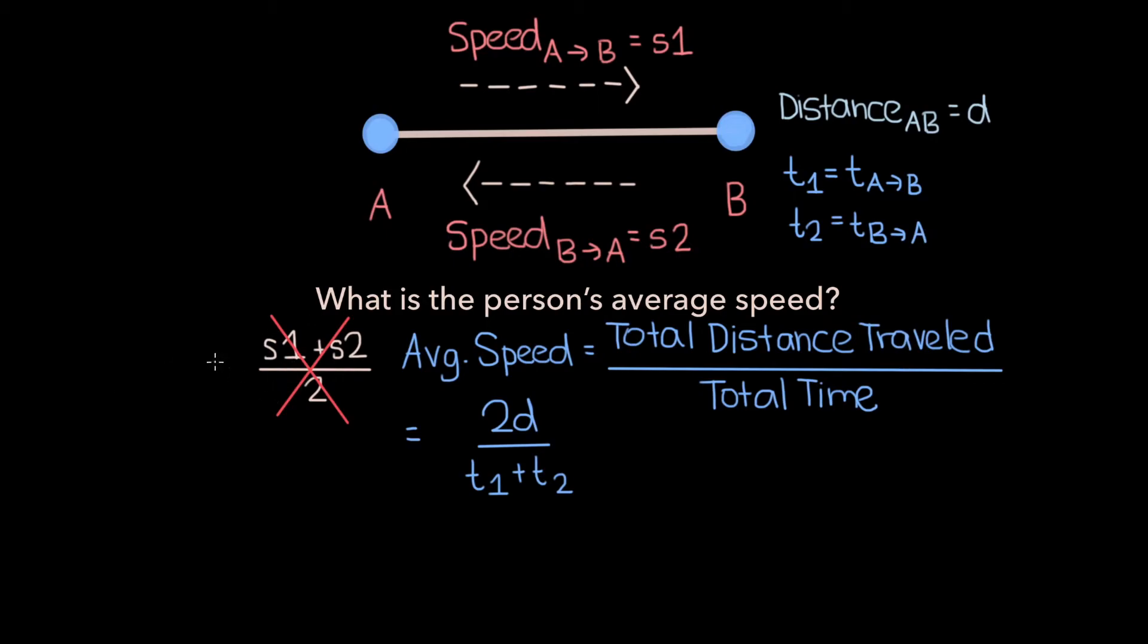Now the next step in this process is going to be determining what the values of T1 and T2 are in terms of S1, S2, and D. And the formula that's going to be useful here is speed equals distance over time. We can rearrange this such that we're solving for T and we would get time is equal to distance over speed.